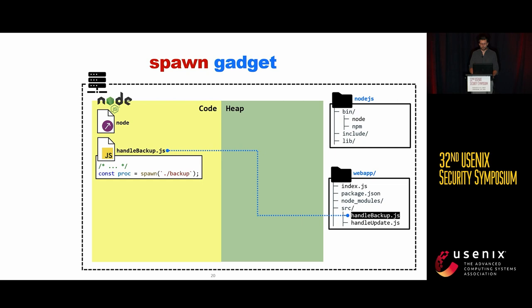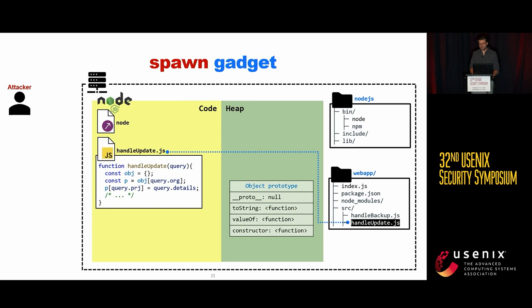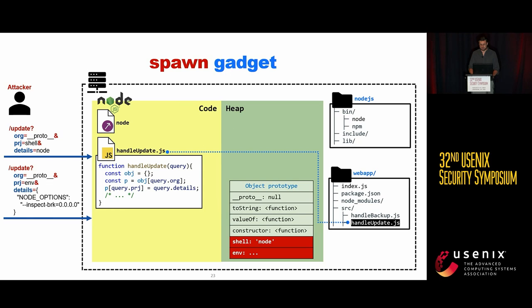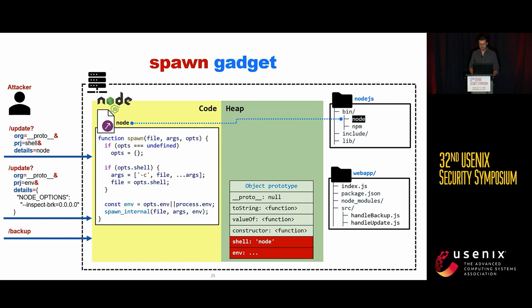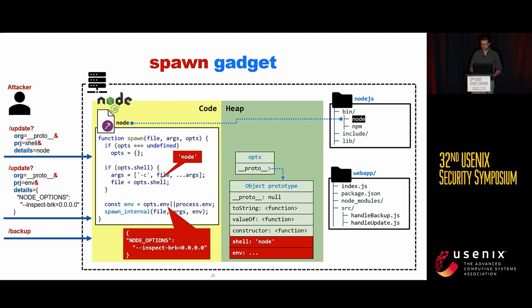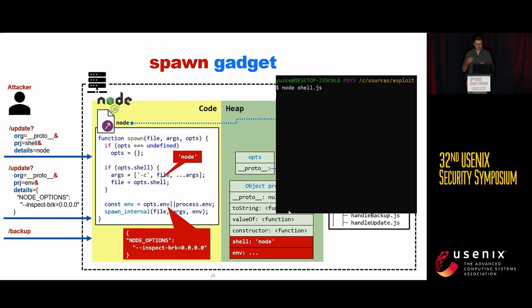Suppose that the backup handler calls spawn with no attacker-controlled arguments. The attacker first pollutes the prototype via an update request, adding the property shell with value node and the env property to the object prototype. They then send a backup request to execute the spawn function. When spawn executes, it reads the values of shell and env from the prototype, allowing the attacker to run Node.js in debugging mode by controlling environment variables and connect remotely to execute arbitrary code. For this, we implemented a shell based on the Node.js remote debugging protocol. You can see a short demo on the slide.